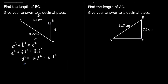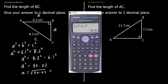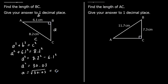So a squared equals 30.03. If we square root both sides, we get a by itself, and to one decimal place that's 5.5. So we've got 5.5 centimeters to one decimal place.